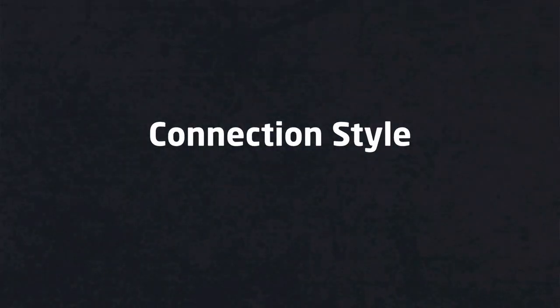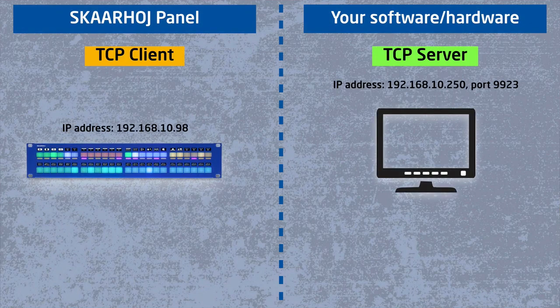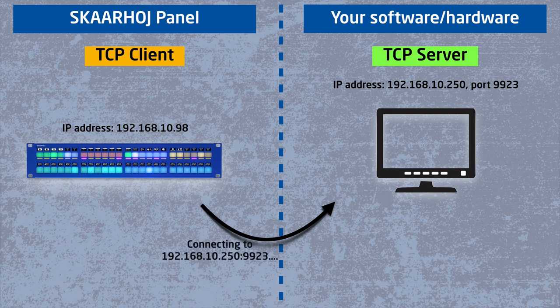In RAW Panel mode, the Skyhoy panel is normally set up as a TCP client that tries to connect to a TCP server at a given IP address. This TCP server is your application, whether that is hardware or software. The port number we use is 9923 by default, but you can of course change that, and there's a simple handshake protocol to keep the connection alive.